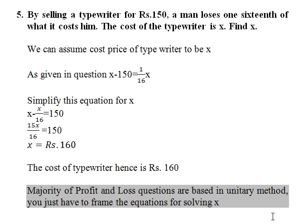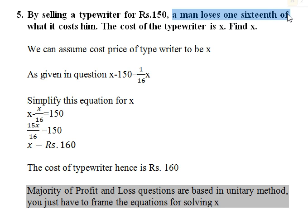Question 5: By selling a typewriter for rupees 150, a man loses 1/16th of what it costs him. Find the cost x of the typewriter. We assume the cost price to be x. Cost price minus selling price equals the loss, so x − 150 = x/16. Simplifying: x − x/16 = 150, which gives x = 160. The cost of the typewriter is rupees 160.